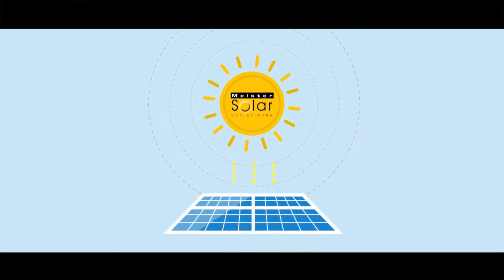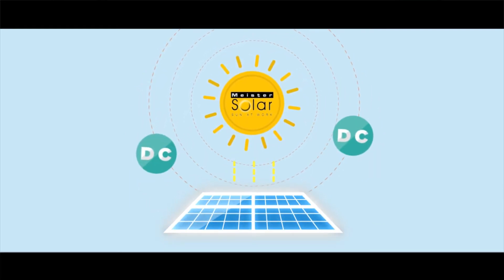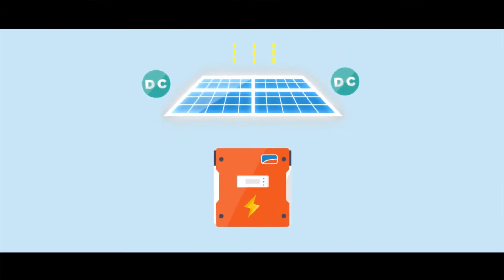The sunlight is absorbed by the solar panels and directly converts the sunlight into DC power. This solar electricity travels from the panels on your roof. The inverter converts your DC power into usable AC, or alternating current, before distributing it inside your home or business.